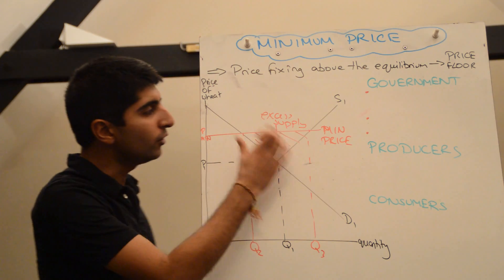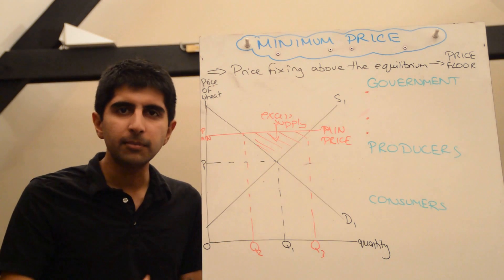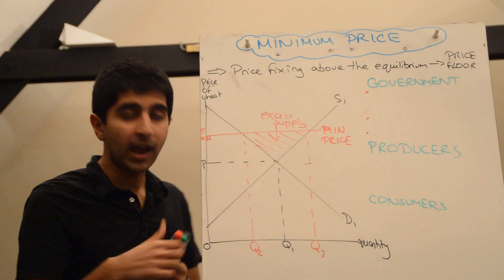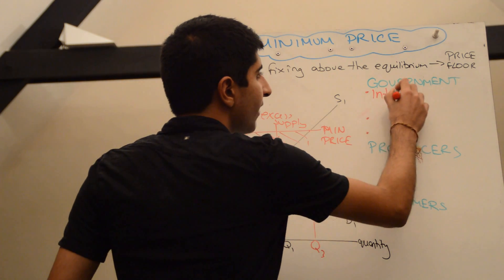So if producers have to deal with the excess supply, they'll need to find a way of storing it or dealing with it, which is deemed unfair. So the government will step in and they will buy up this excess supply. And that's known as intervention buying.